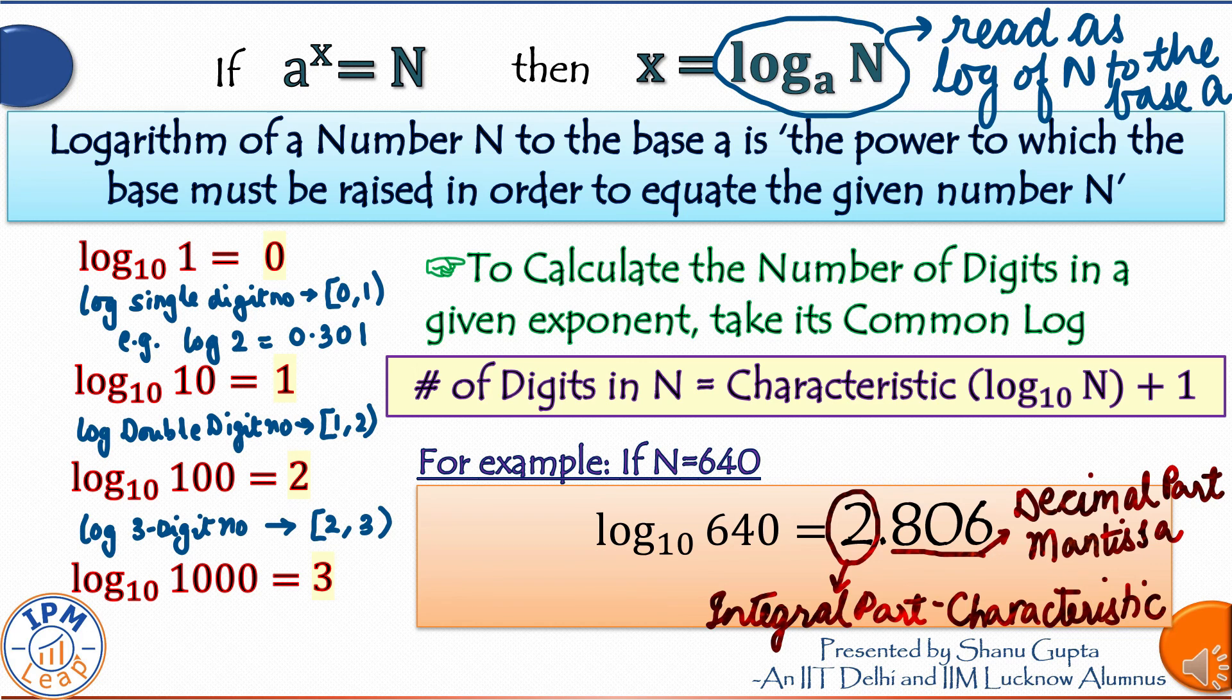You guessed it right. The number of digits in any general number are always one more than the characteristic of its common log. With this overview, I am confident that we can tackle the questions now.